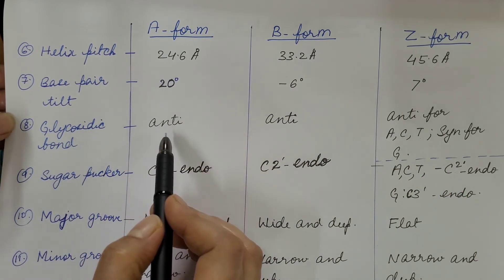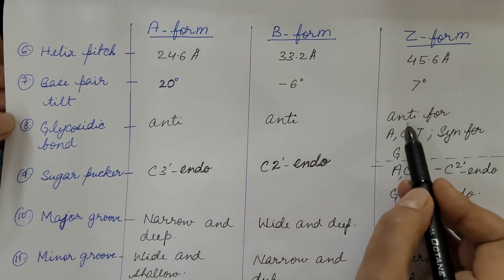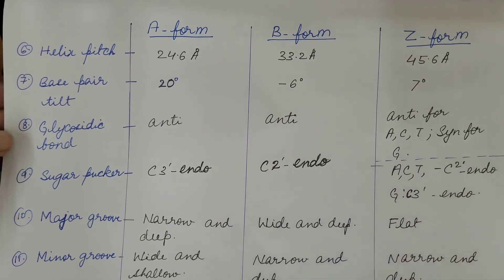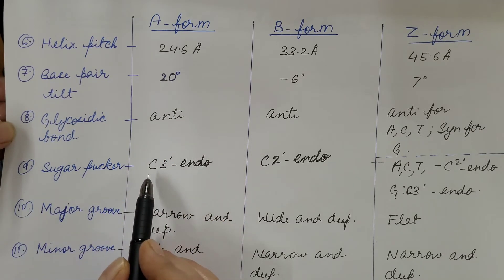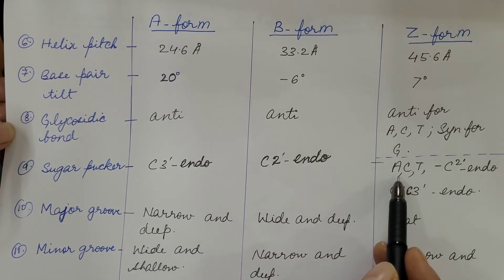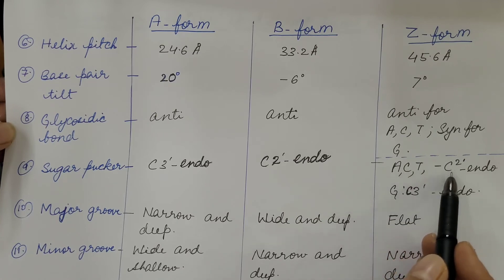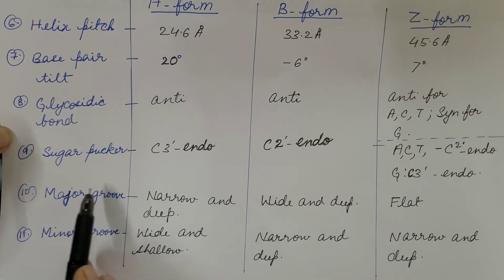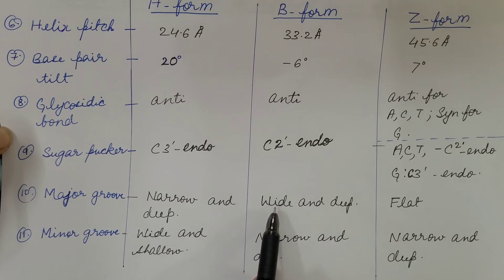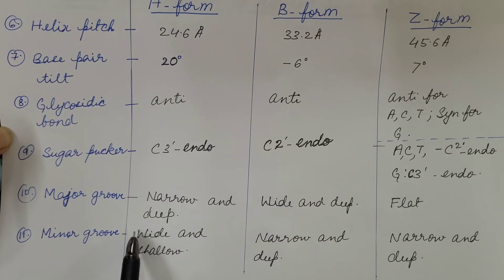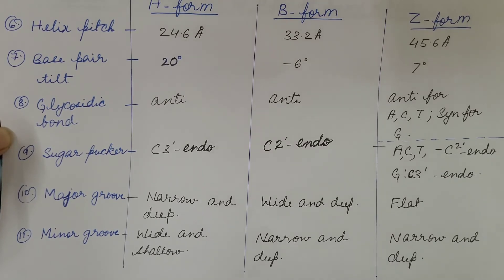Glycosidic bond conformation: A-form is anti, B-form is anti, and Z-form is anti for adenine, cytosine, and thymine, but syn for guanine. Sugar pucker: A-form is C3′-endo, B-form is C2′-endo, and in Z-form adenine, cytosine, and thymine are C2′-endo while guanine is C3′-endo. Major groove: A-form is narrow and deep, B-form is wide and deep, and Z-form is flat. Minor groove: A-form is wide and shallow, B-form is narrow and deep, and Z-form is also narrow and deep.